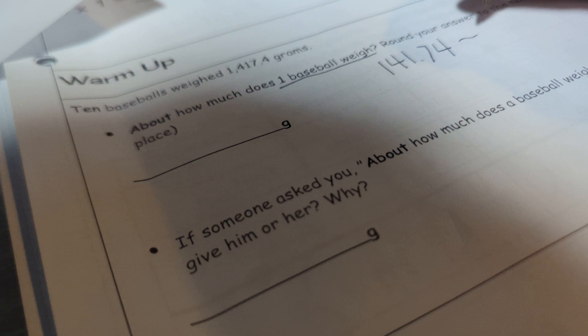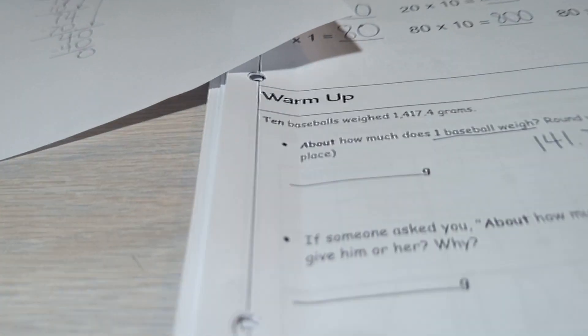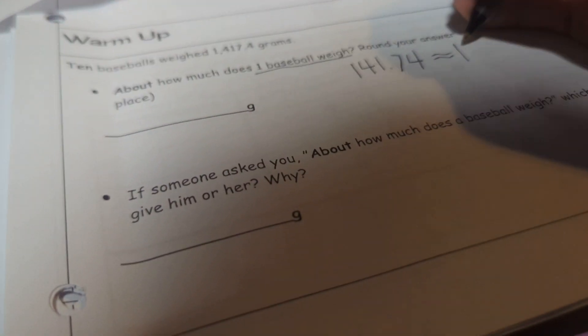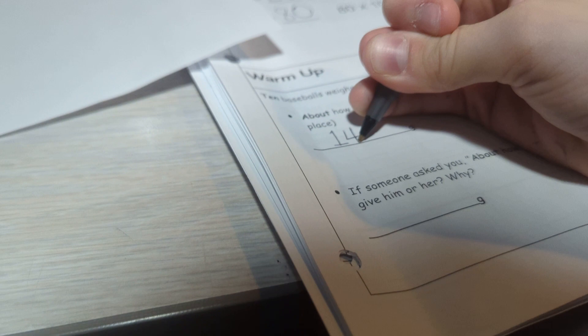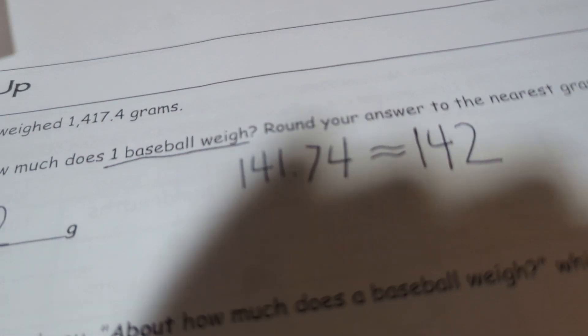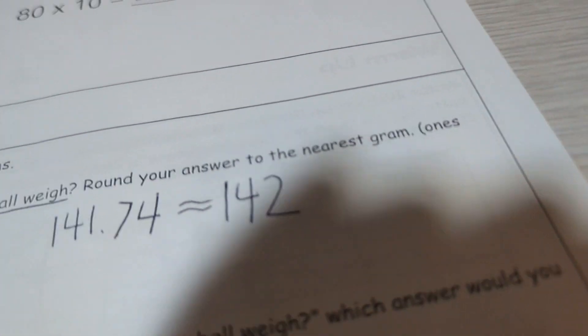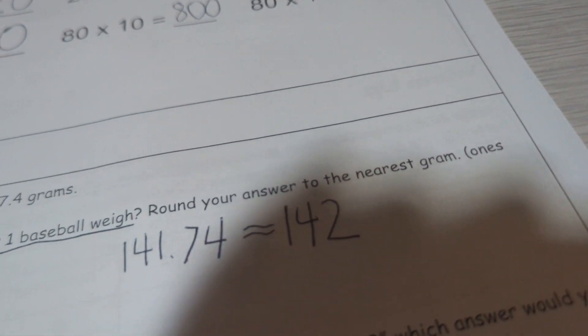So you round it up to the nearest gram. So you got 142 because 141 and 74 hundredths rounds to 142.